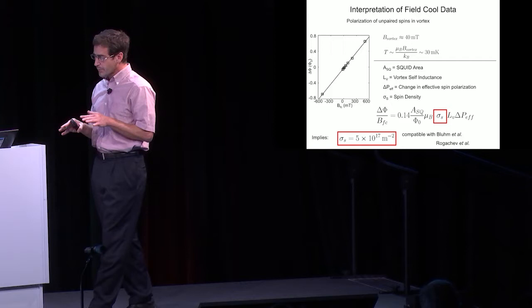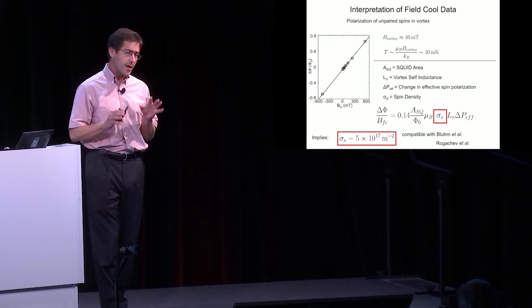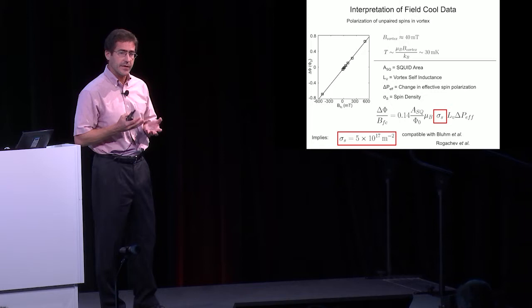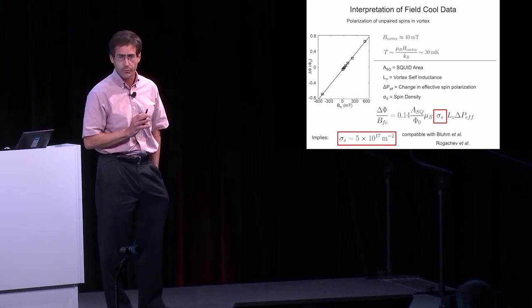This data was the first experiment that really pointed to the existence of a high density of magnetic states on device surfaces. We can back out a surface density of spins corresponding to about one Bohr magneton per nanometer, an extremely high density of magnetic defects.